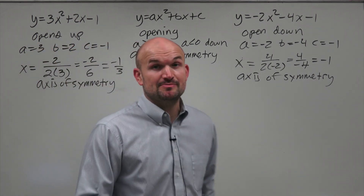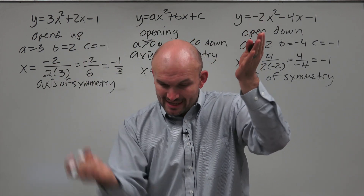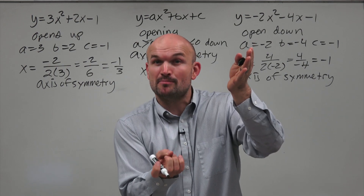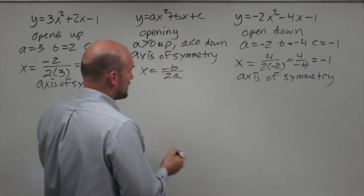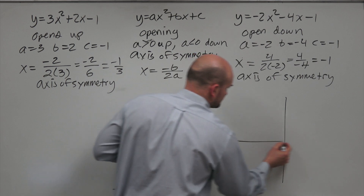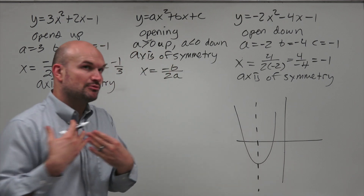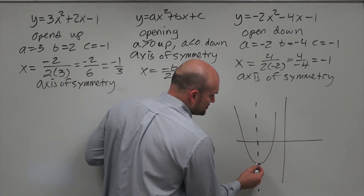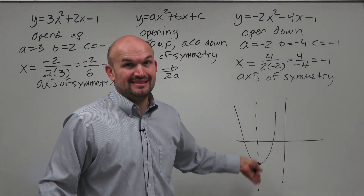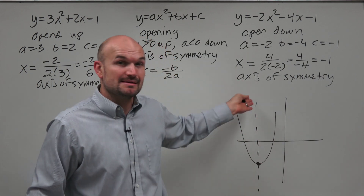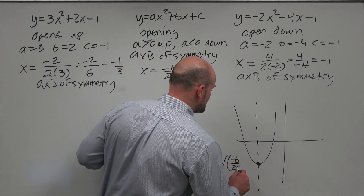Now the next part we need to understand is the vertex — that's the extrema of our graph. If the graph opens up, we have an absolute minimum at the bottom. If it opens down, we have an absolute maximum. The axis of symmetry cuts the parabola in half and passes through the vertex, so the x-coordinate of the vertex equals negative B divided by 2 times A.